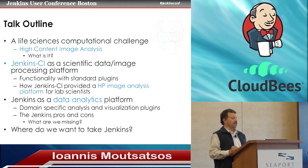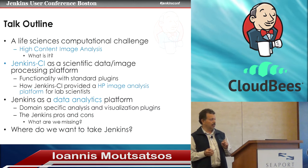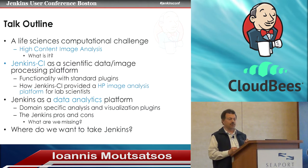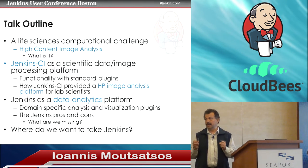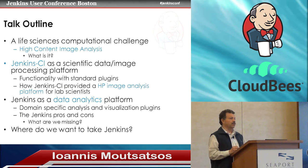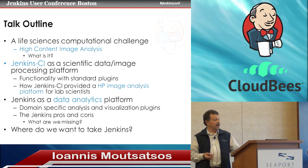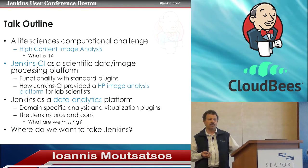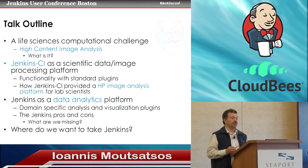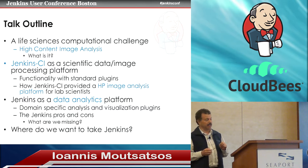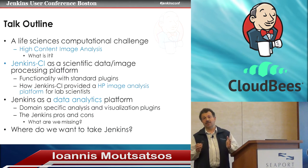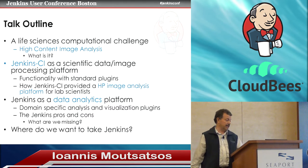The outline of my talk is as follows. I'm going to talk about a field of science called high-content image analysis and introduce it so most people can follow the problem we're trying to solve. Then I'll talk about how we use Jenkins as a scientific data image and processing platform, using standard plugins to provide lab scientists access to high-performance image analysis. Finally, I'll introduce how we're trying to use Jenkins as a data analytics platform, which requires domain-specific plugins and visualization, and discuss the pros and cons of using Jenkins in this context.